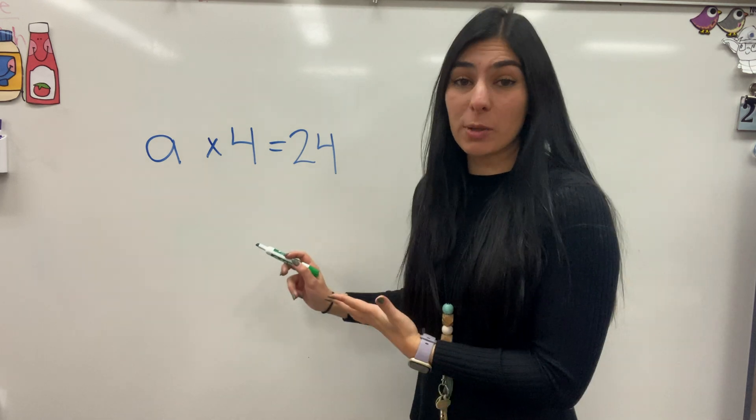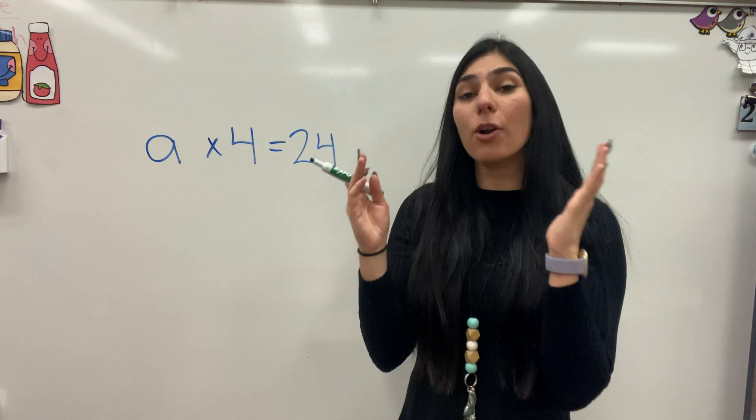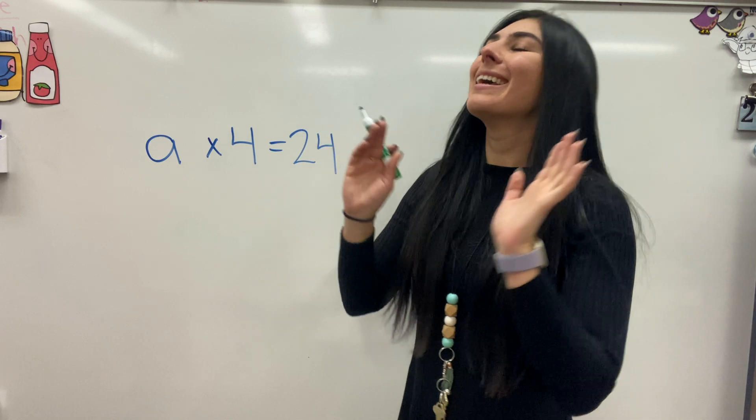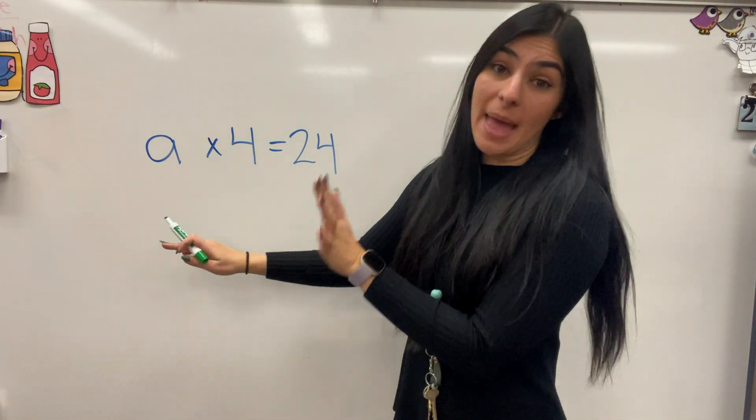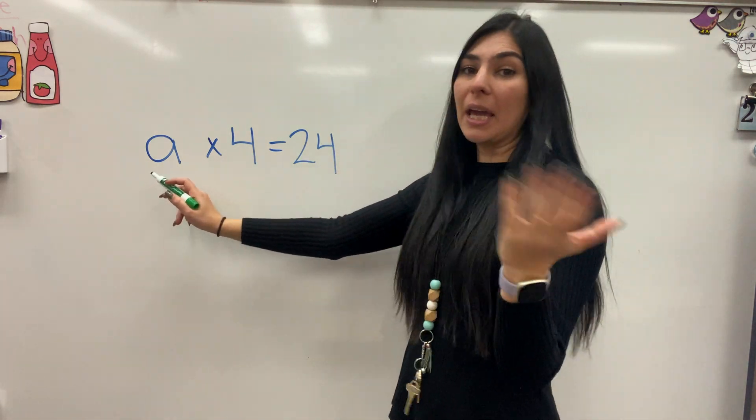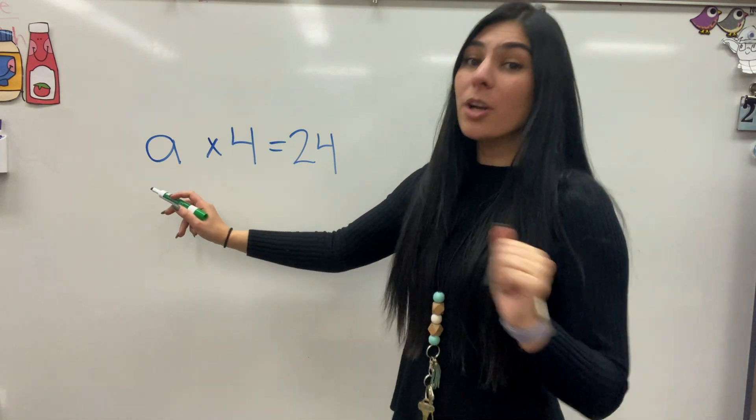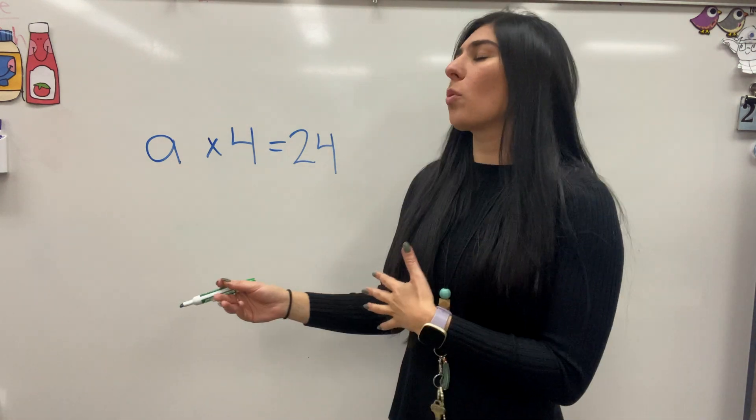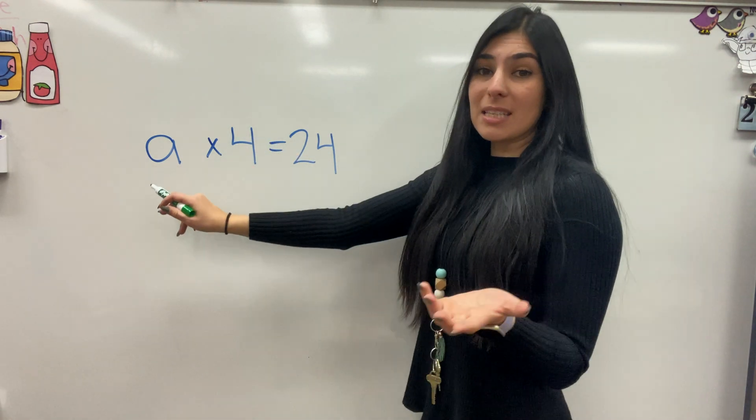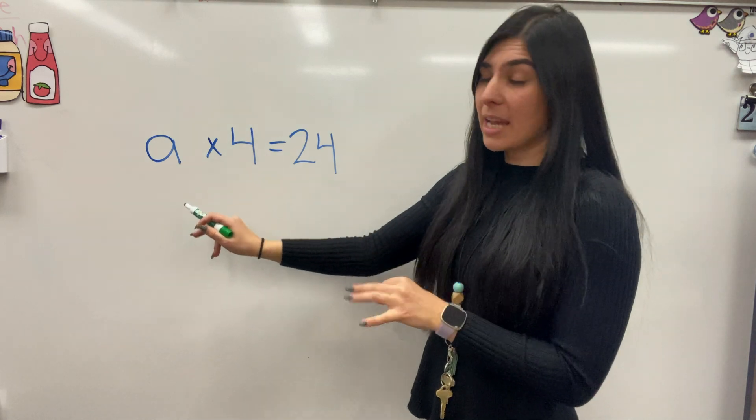Okay, so I have A times 4 equals 24 and I know you must be thinking, Ms. B, why are there letters in this multiplication sentence? And you can have different letters, A, M, B, or you can have symbols like a star, a square, an octagon. All this means that this is a missing factor that we need to find the answer for.